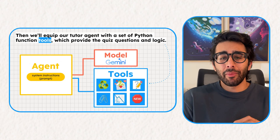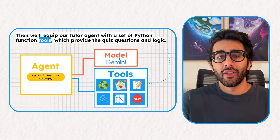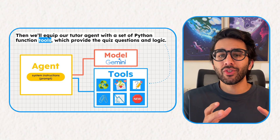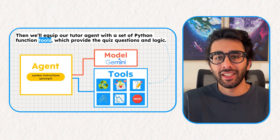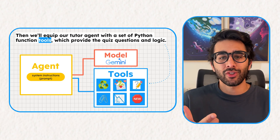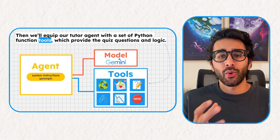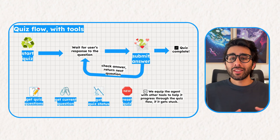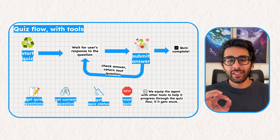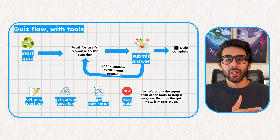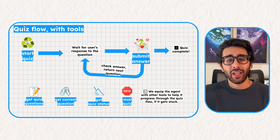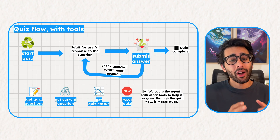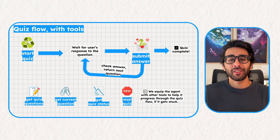Next, we give our agent a brain. In this case, we'll use Gemini 2.5 Flash as the model for reasoning. Then we equip it with tools — these are simply Python functions that give the agent special abilities beyond just talking. We'll give it tools like start_quiz, submit_answer, and get_quiz_status so it can actually manage the quiz. With these components in place, we have a clear quiz flow that starts to emerge: the agent starts the quiz, waits for a response, and then uses its tools to check the answer and fetch the next question, all while following the logic we gave it in the system prompt.